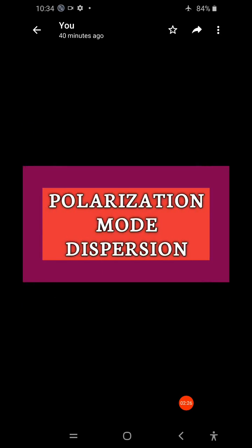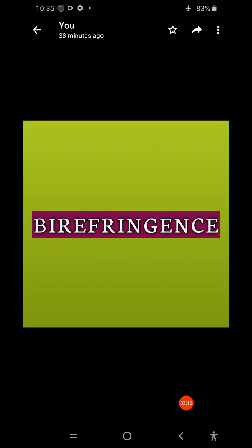Polarization mode dispersion refers to the effects of birefringence on the polarization states of an optical signal, and it is another source of pulse broadening. By the birefringence effect on the polarization states of an optical signal, we get pulse broadening. Dispersion is nothing but pulse broadening, and polarization mode dispersion occurs from birefringence effects on the optical signal.